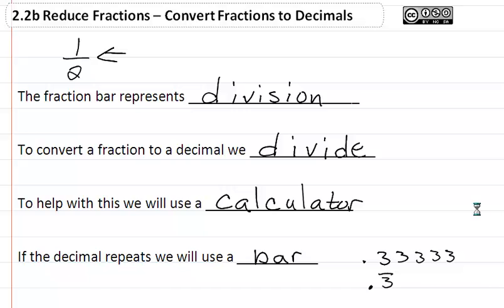If we had 0.13 and the 1 and the 3 kept repeating, we would write that as 0.13 with a bar across the top.